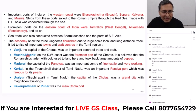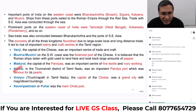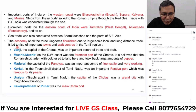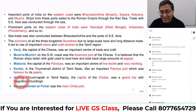The important trading centers include Vanji, the capital of the Cheras, and Muziri or Muchiri, the important port of the Cheras. Madurai and Korkai were the important trading centers of the Pandyas. The fifth and sixth important trading centers belonged to the Cholas. Please revise these through your notes — it's all there in the notes.